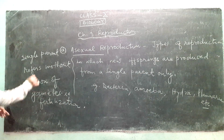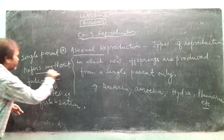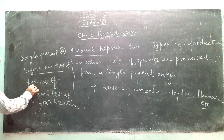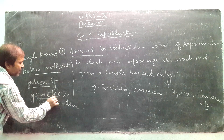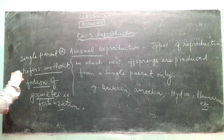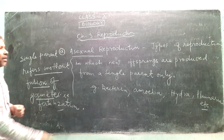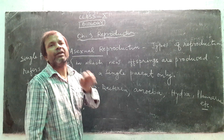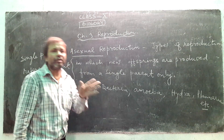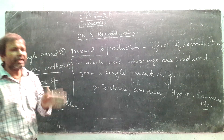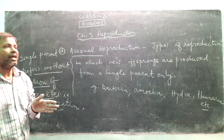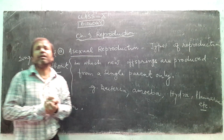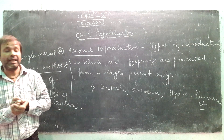In asexual reproduction, a single parent produces new offspring without fusion of gametes — that is, without fertilization. So in asexual reproduction, fertilization does not occur, and new offspring are produced from one parent.